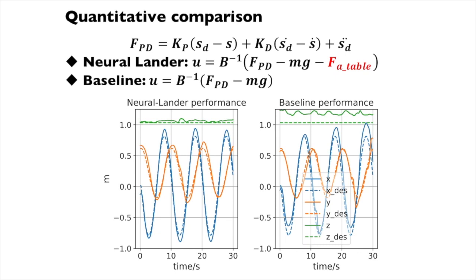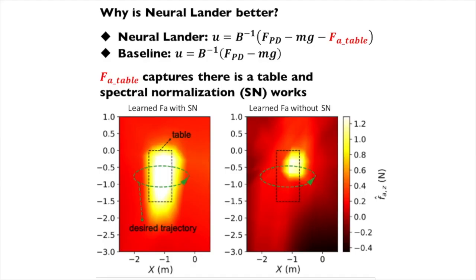Our method works in the new environment because we learn F_a table, the residual dynamics near the table. As you can see, when we employ spectral normalization, our learned model makes reasonable predictions about the dynamics near the table.